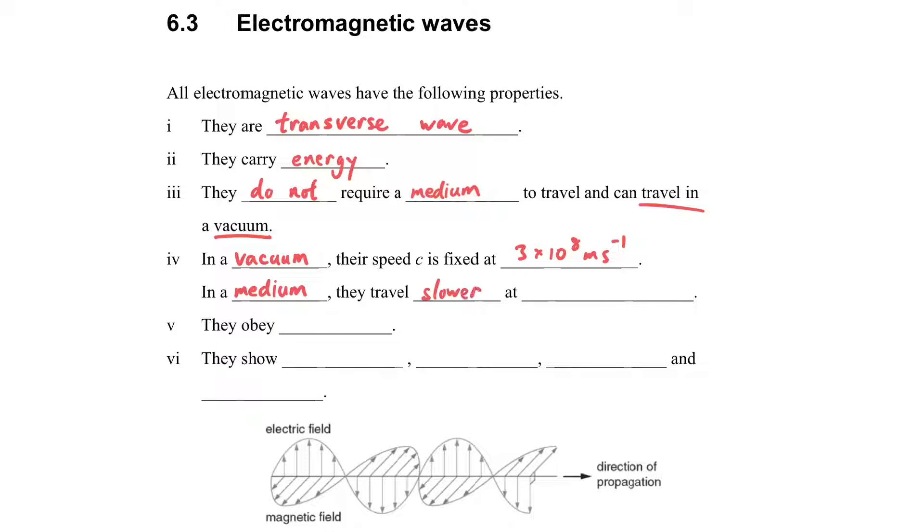In a medium, they will travel slower at different speeds depending on the medium. Since this is a wave, it obeys the wave equation, we have lambda (wavelength), and it can show wave phenomena.